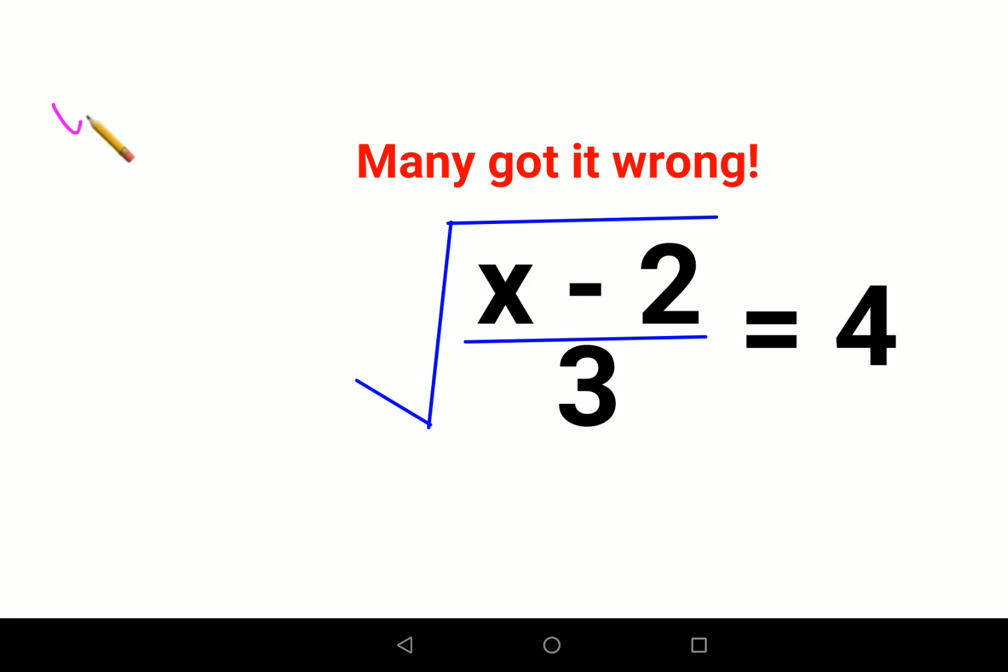So we will write down our question one more time here. We have square root of x minus 2 divided by 3 equals 4.